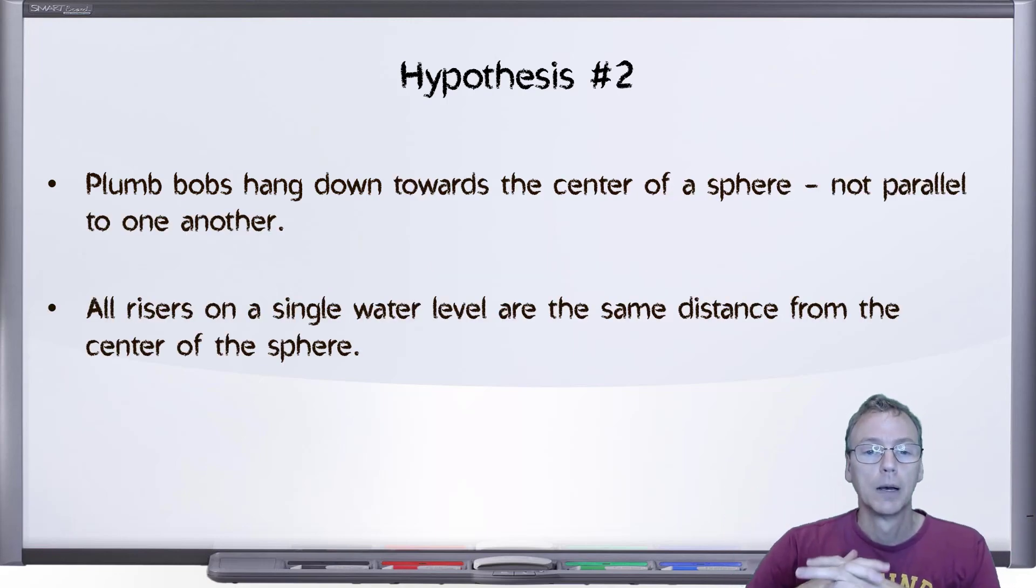Hypothesis number two: plumb bobs hang down towards the center of a sphere, and are therefore not parallel to one another. Under this hypothesis, all risers on a single water level are the same distance from the center of the sphere.